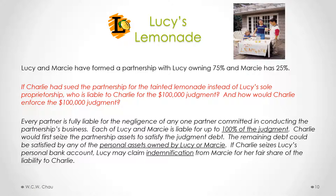Every partner is fully liable for the negligence of any one partner committed in conducting the partnership's business. Each of Lucy and Marcy is liable for up to 100% of the judgment, meaning any one of them can be made to pay the full $100,000. Charlie would first seize the partnership assets. If there's still money owing, the remaining debt could be satisfied by the personal assets of either Lucy or Marcy. If Charlie seizes Lucy's personal bank account, Lucy may claim indemnification from Marcy for her fair share of the liability.